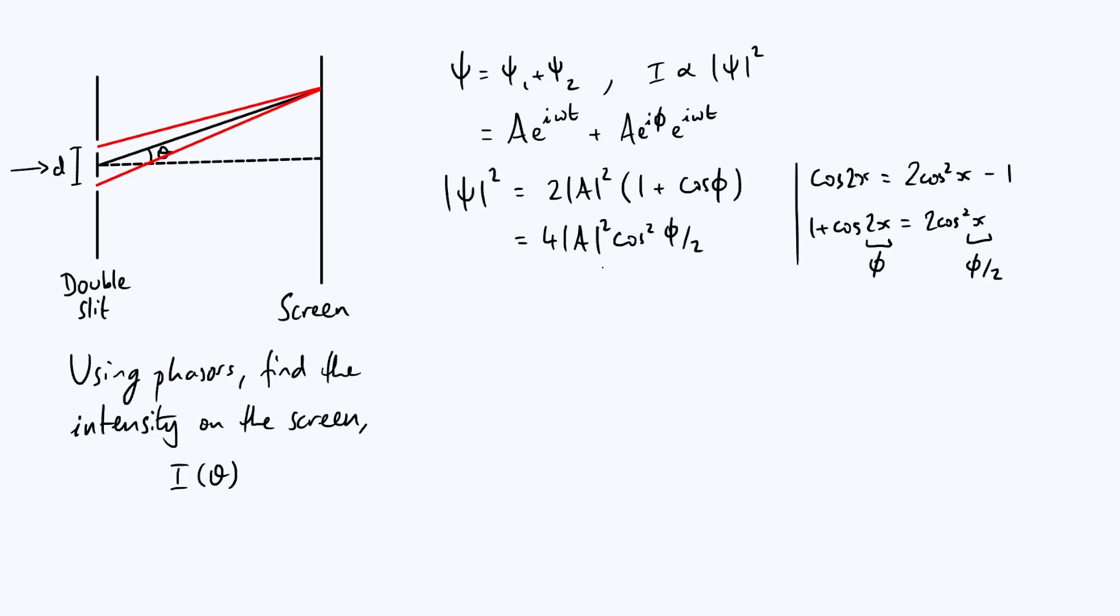Now how does this relate to intensities? Well the intensity is proportional to mod of psi squared, so what I'm going to do is just write the left hand side as I. The right hand side I'm going to write as 4 I0 coming from the mod a squared. I'll explain what that is in a second. We've still got our cos squared of phi over 2. Now I0 is proportional to mod a squared. a was the complex amplitude of the wave coming out of each of the slits.